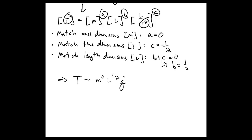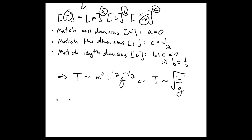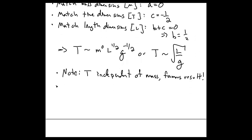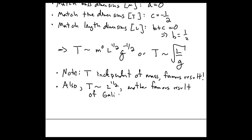So we can rewrite our expression for the period as mass to the power zero, length to the one-half, and gravitational acceleration to the minus one-half — or the period goes as the square root of length over gravitational acceleration. There's an important famous result here: the period is independent of the mass, and the period depends on the square root of the length — a result due to Galileo.